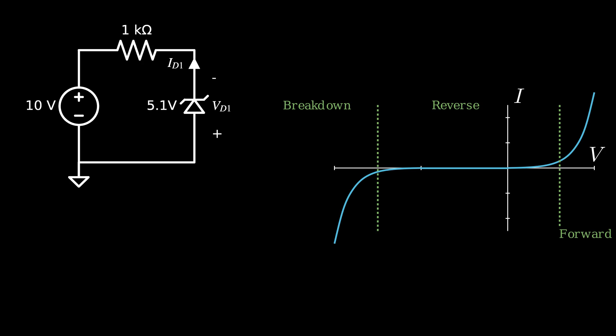Now, even though the component is labeled positive 5.1 volts, and every datasheet I've ever come across lists the value as positive 5.1 volts, I'm going to add that voltage to the plot on the negative side where it belongs.